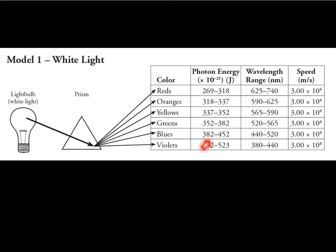The energy increases as you go down, but the wavelength decreases — so as energy increases, wavelength decreases; those two are opposites. The color with the highest wavelength would be red, and red also has the lowest energy. Violet has the highest energy but the shortest wavelength. The speed that all of these travel through a vacuum is identical — they all travel 3.00 times 10 to the 8th meters per second, and that's a constant.